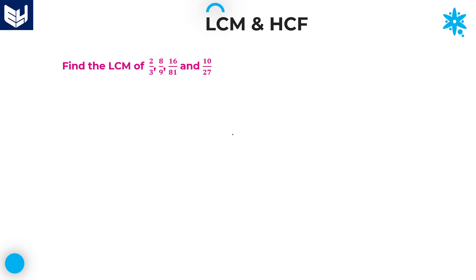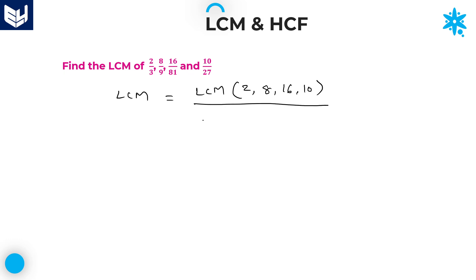Let's move on to the next question. LCM of fractions is equal to LCM of numerators divided by HCF of denominators. LCM of numerators: 2, 8, 16, and 10. And in the denominator, HCF of denominators: 3, 9, 81, 27. You need to calculate this.